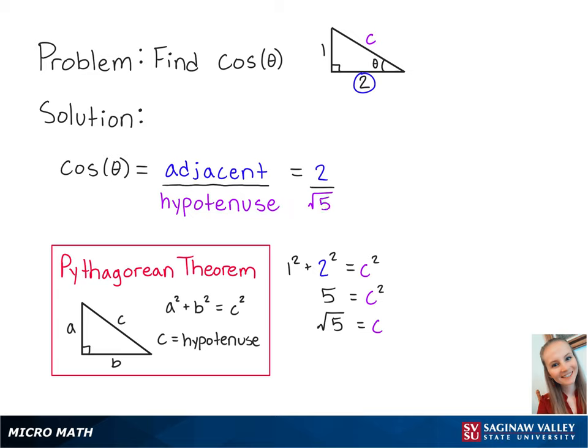We want to rationalize the denominator. So we're going to multiply the top and the bottom by the square root of 5 so that we have 2 times the square root of 5 over 5. And this is the final answer.